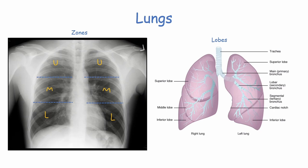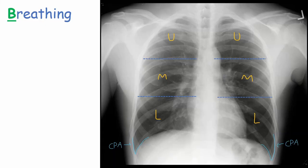The right lung has three lobes — superior, middle, and inferior — whilst the left lung has just two, superior and inferior, with a small section called the lingula. When assessing the lungs, we need to compare the three zones from left to right, checking for any asymmetries that could be caused by pathology. The lung should have normal markings bilaterally, without any areas of increased density excluding normal anatomy. Normal lung markings should also be visible up to the edge of the lung field to exclude a pneumothorax.